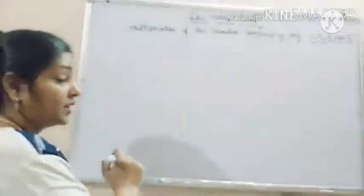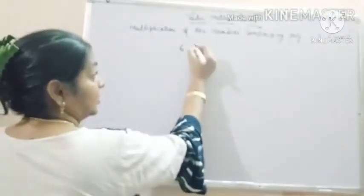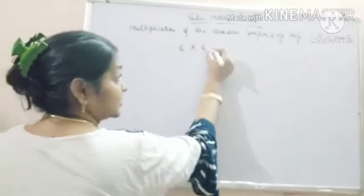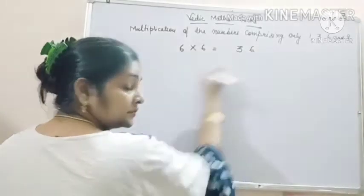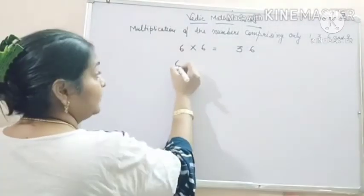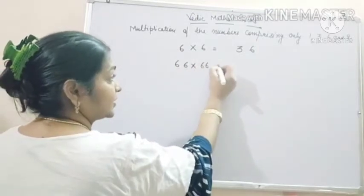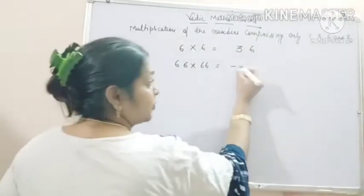It's turn of number 6. 6 into 6 is 36. Now if there are double 6, the answer should be what is it?